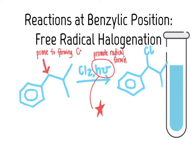A common mistake is that people see the aromatic ring and are trained to think electrophilic aromatic substitution, then see chlorine and assume they'll replace a hydrogen on the ring. That will only be the case if an iron catalyst is present. If instead there's light and heat, that promotes free radical reactions. Iron favors electrophilic aromatic substitution; light and heat favor free radical halogenation at the benzylic position.